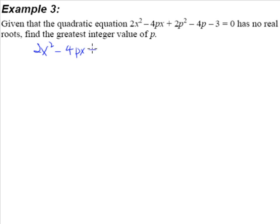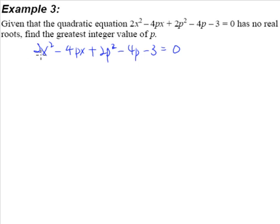We have to copy this quadratic equation out one more time. You always have to look out for the coefficient of x squared, the coefficient of x, and the constant term. As you can see here, this 2 is the coefficient of x squared, negative 4p will be your coefficient of x, and your constant term is 2p squared minus 4p minus 3. P is a constant term.